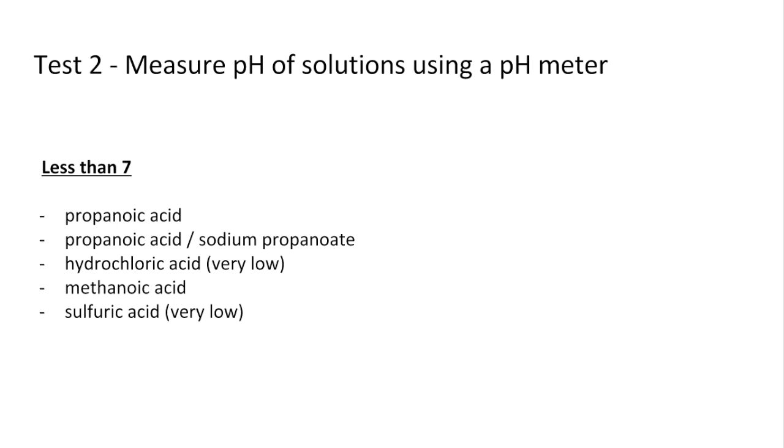You could if you wanted to actually roughly say what the number would be. I'm actually going to do the calculations for all of these at the end of the video and you can have a go at doing those as well. So I'm not going to specify any numbers here apart from saying that hydrochloric acid and sulfuric acid would have very low pHs compared to the others.